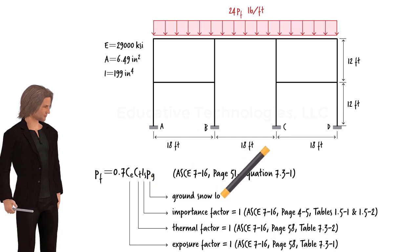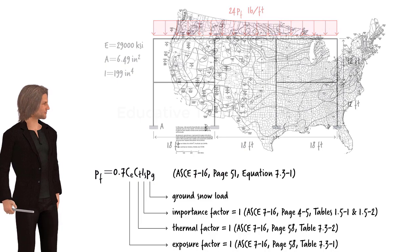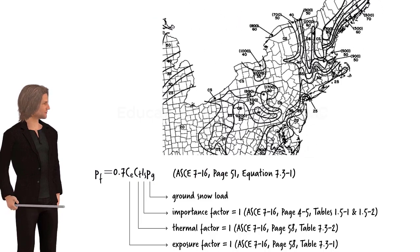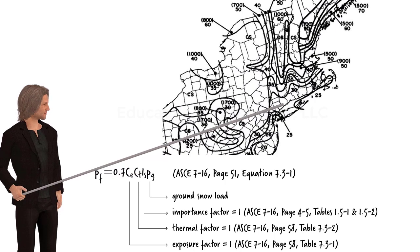P-G refers to the ground snow load. Its value can be determined using a map given in the standard. Since the house in our example is located in a suburban area near New York City, a P-G of 30 pounds per square foot should be used.